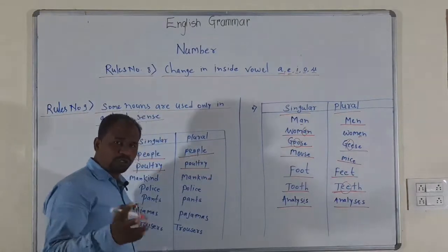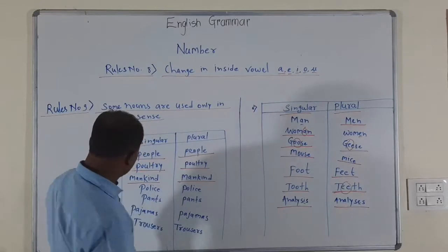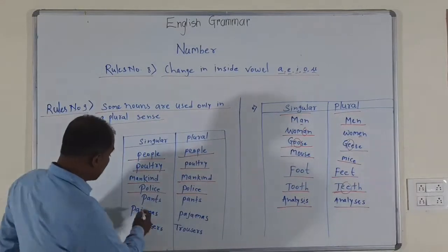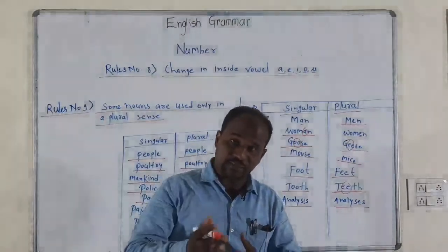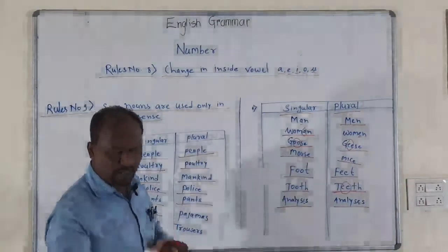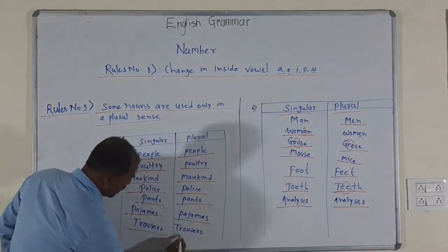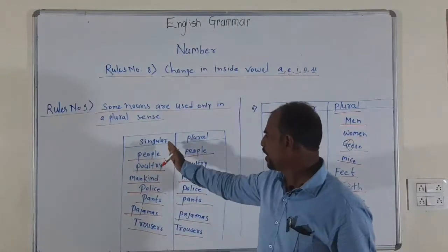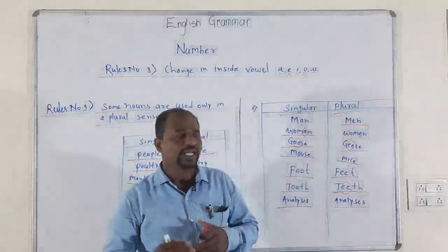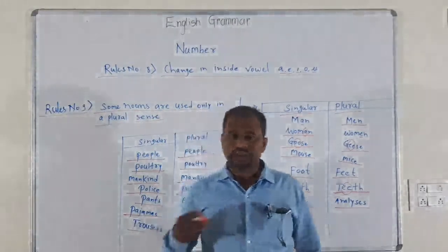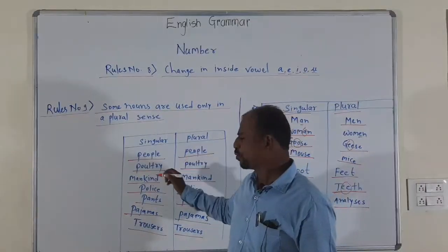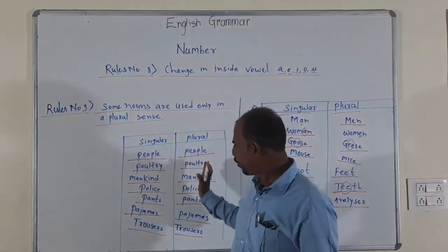Poultry — singular and plural are the same. Then mankind, mankind. Then police — P, O, L, I, C, E — police. Then pants — P, A, N, T, S — singular and plural are both pants. Similarly pajamas and trousers. These nouns have the same singular and plural forms, so we use them in both singular and plural sense — we cannot say peoples, only people.